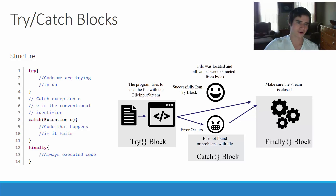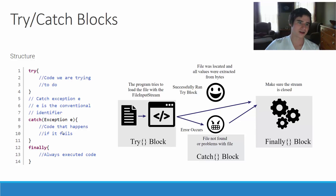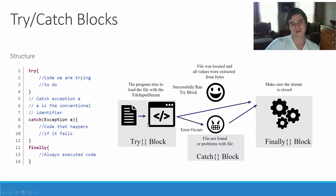To correct things that go wrong in our program, we can use try-catch blocks. For example, we might try to open a file, and then if something goes wrong — like we get a FileNotFoundException — we can catch that exception using a catch block. Then we can correct the problem and have the user enter another file name and try to open that file instead. The try block contains the code statements we are trying to execute, and the catch block is where we catch the exception — if something goes wrong in the try block, it throws an exception that gets caught there.